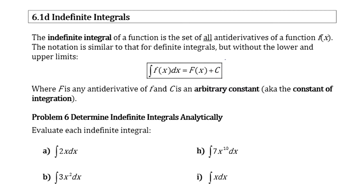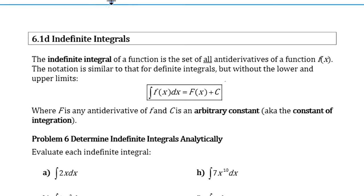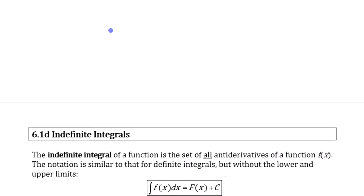Now, we've had definite integrals before. We've looked at what those are. The definite integral, when you have some boundaries on something, integral from, say, 2 to 5 of 2x dx. Now, we looked at what that meant.